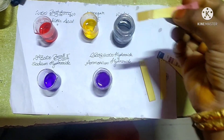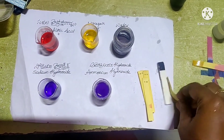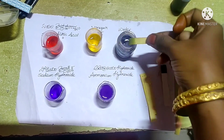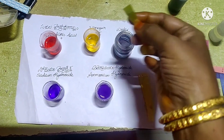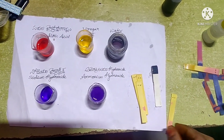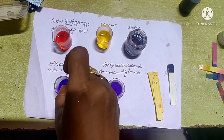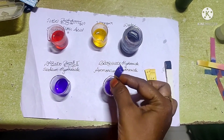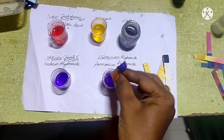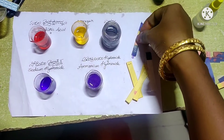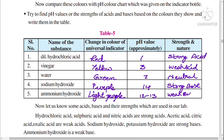The purple color indicates pH 14, which represents a strong base. From 8 to 14 it indicates bases — the last number 14 is a strong base, also called a strongly alkaline solution. The light purple indicates pH 12 to 13, which is a weak base or weak alkali.